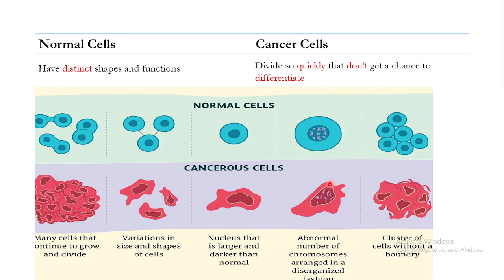When you look at chromosomes during replication, they are very well arranged in normal cells but poorly arranged and disorganized in cancer cells. Most of the time you see polyploidy in cancer cells, compared to the diploid nature of normal human cells. Normal cells also have very clear boundaries, whereas clusters of cancer cells do not have a clear boundary, as you can see clearly in these images.